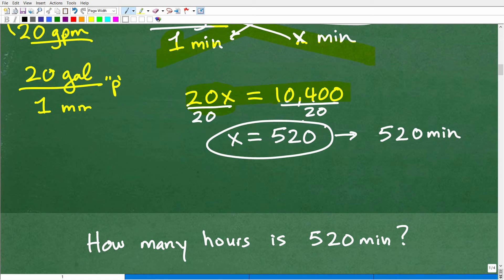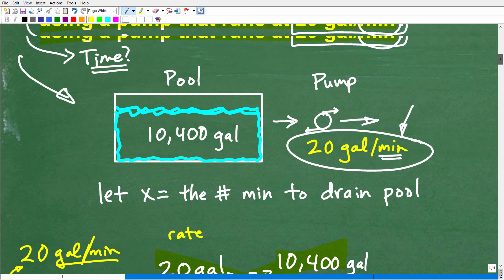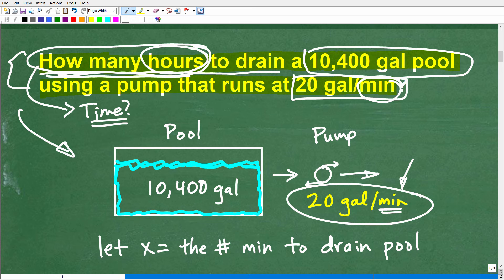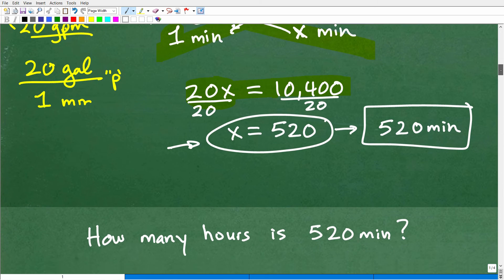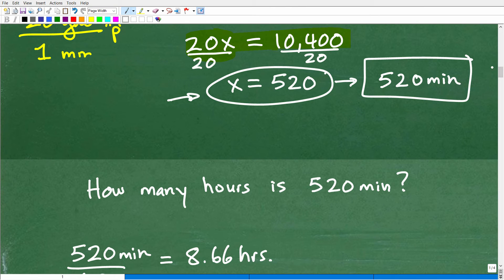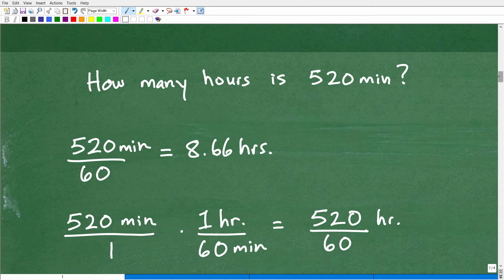Now, if you were just, you know, moving very quickly and you say, oh, look at teacher, I got the answer. The answer is 520. But 520 what? Well, remember, X equals the amount of time in minutes it takes to drain this pool. So it takes 520 minutes to drain this pool. But the question is asking what? How many hours? Okay. So now we're going to have to take a look at our answer from our equation and make sure we're answering the question from the problem.